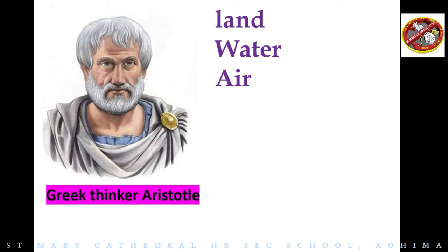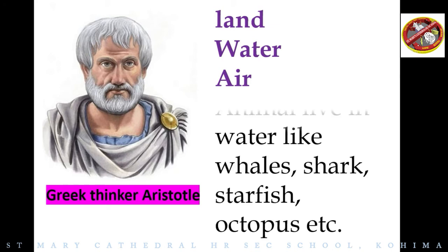This is a very simple way of looking at life, but misleading too. For example, animals that live in water — like whales, sharks, starfish, and octopus — are very different from each other in numerous ways. In fact, their habitat is the only point they share in common. This is not an appropriate way of making groups of organisms to study and think about.